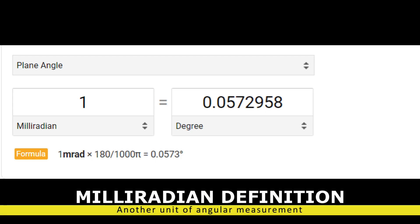The definition of a milliradian is basically it's another unit of angular measurement. For example, one milliradian is equal to 0.0572958 degrees. Just another unit of angular measurement, that's all.